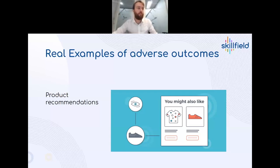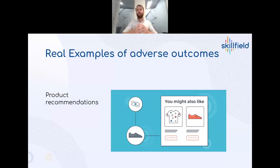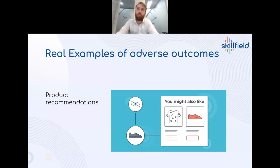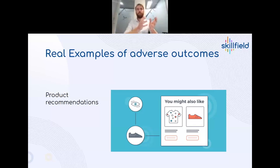One real-world example is product recommendation systems. You look at a product and it says 'you might also like this.' These systems train off real data — user reviews, comments, basket additions, and purchases — making them susceptible to a coordinated attack. In 2020, Amazon had products around peer-reviewed medical journals on vaccines, and a political group did a coordinated attack manipulating the training data so the system recommended anti-vax content when users searched for unbiased, peer-reviewed vaccine information.